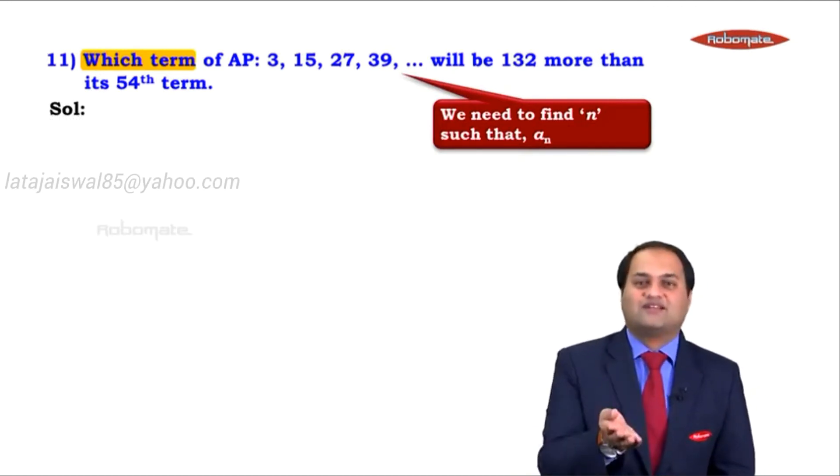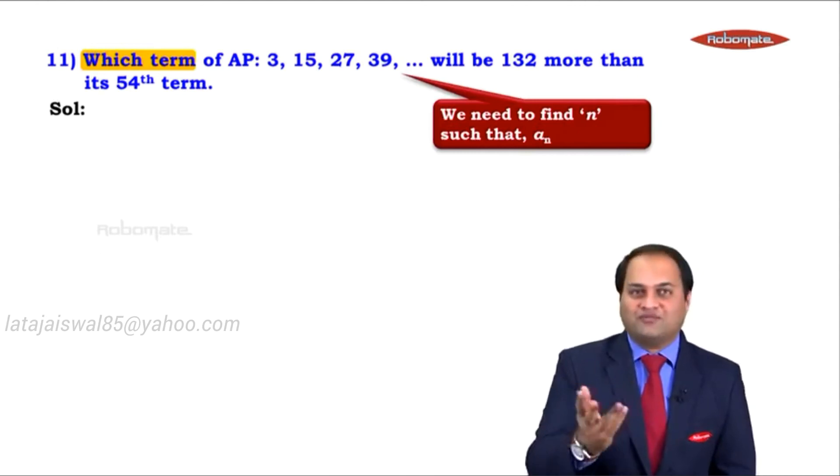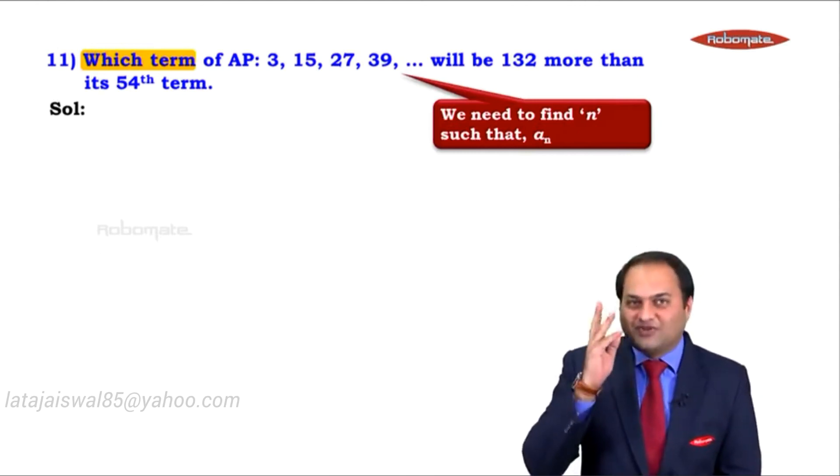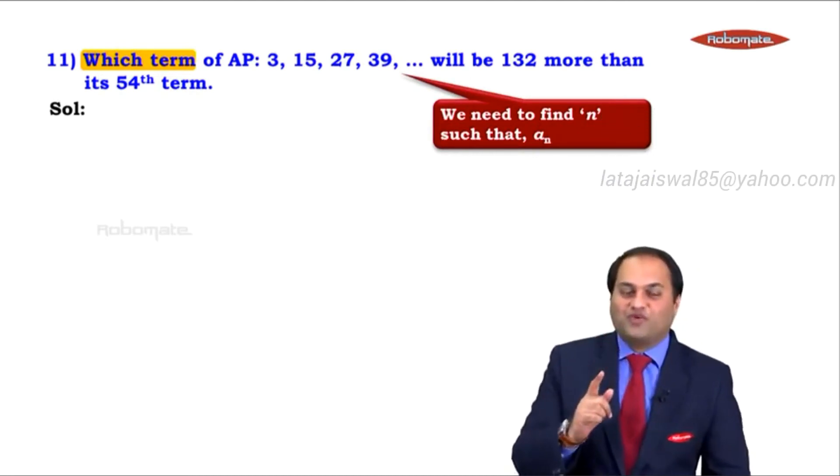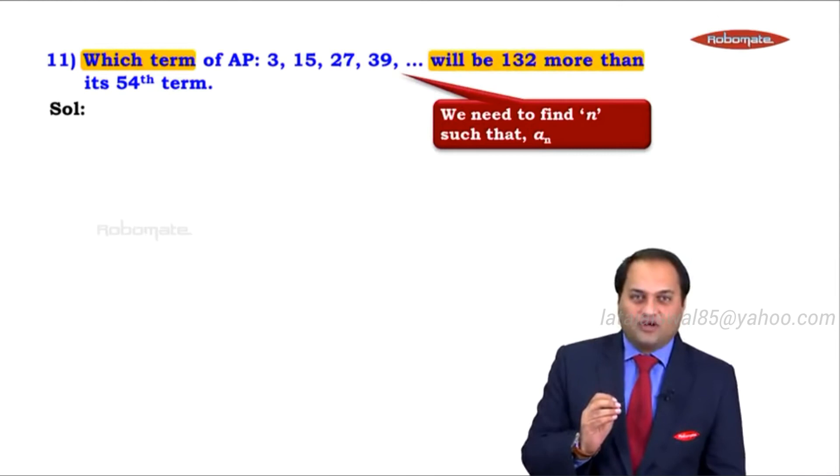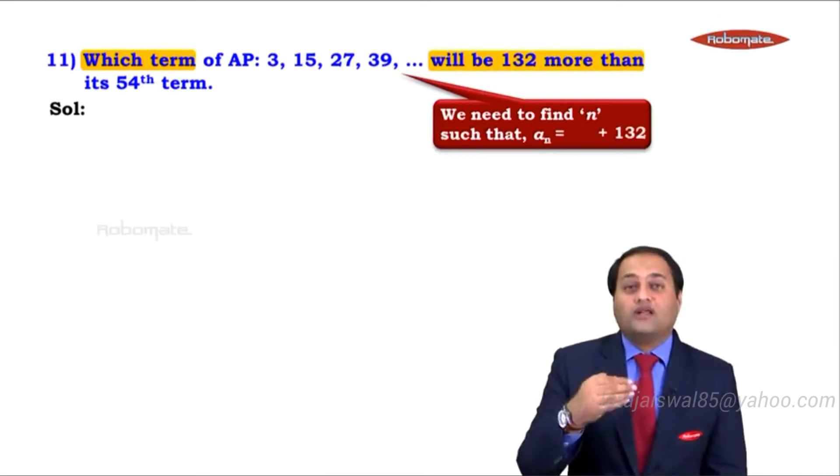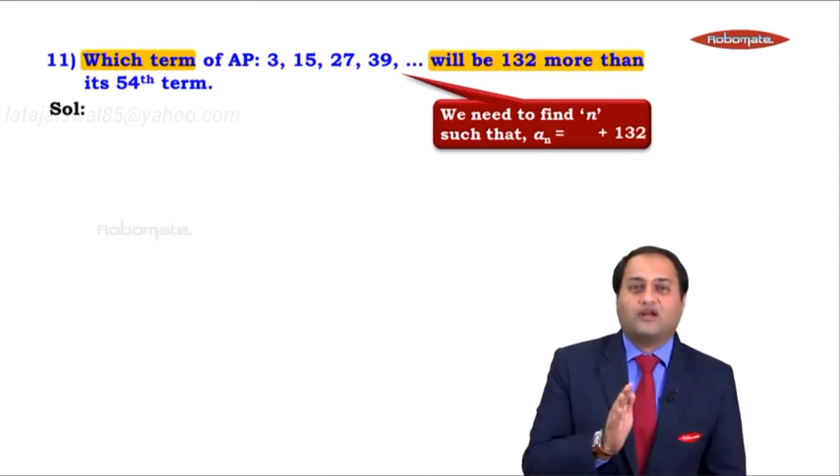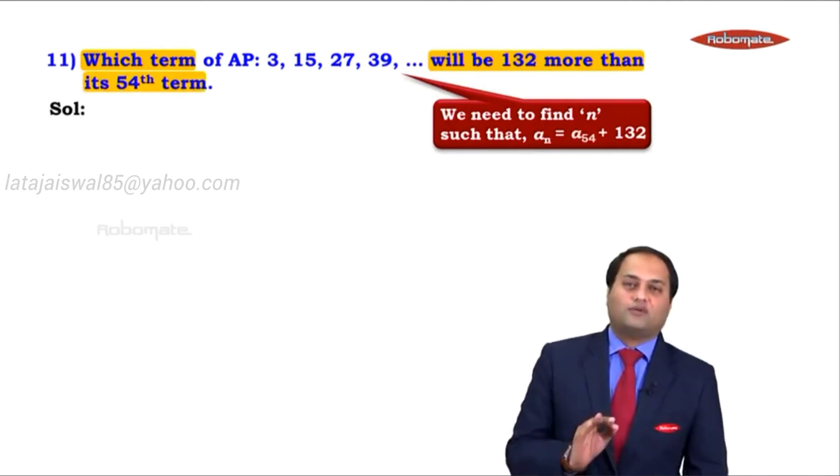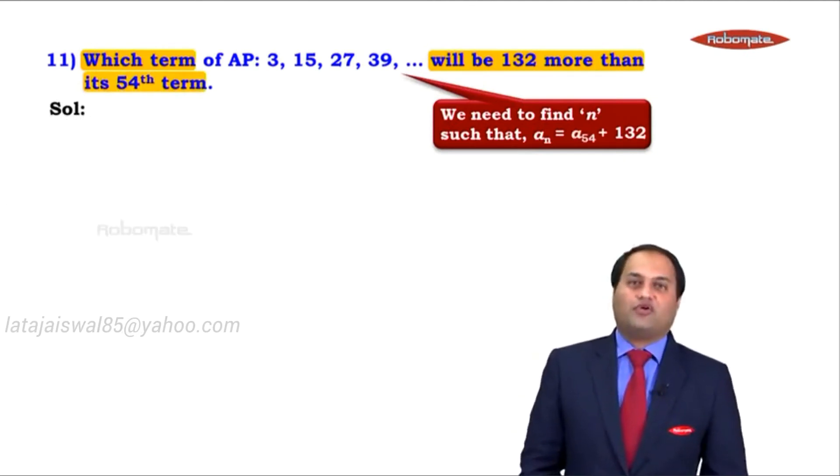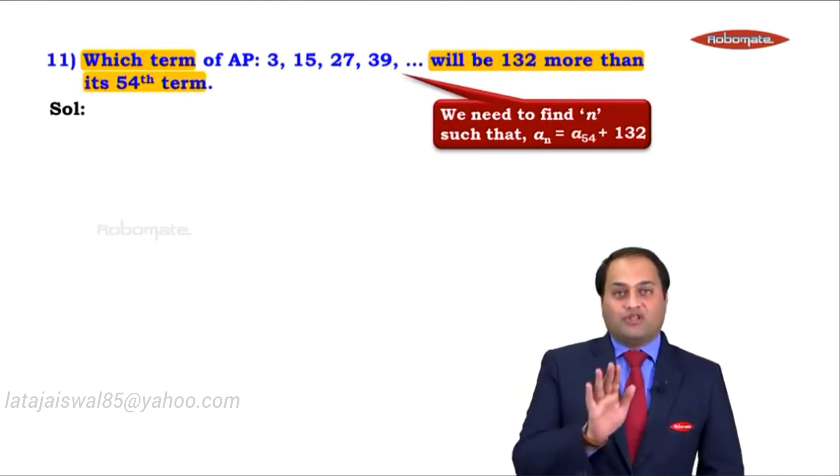In other words, we say an exceeds the 54th term by 132. You remember that exceeds by 132? So how do you form this equation? Here, an is equal to 132 more, that is plus 132. 132 more than what? 132 more than its 54th term. So an is equal to a54 plus 132.